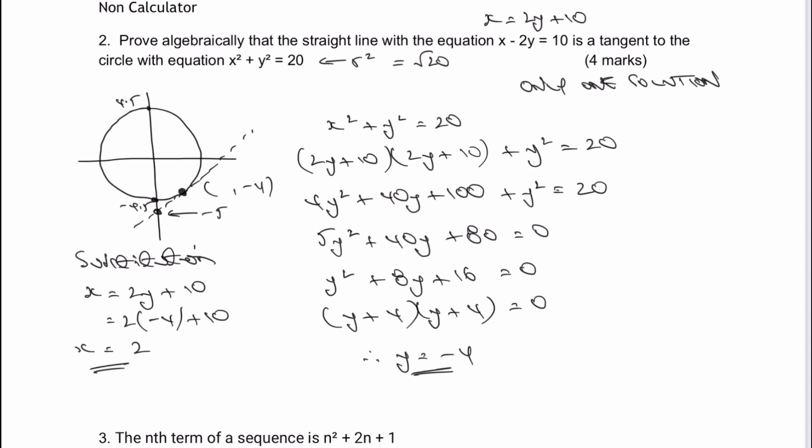So now I've got my two values, one for x and one for y. But importantly, it's one solution, which clearly demonstrates it's a tangent. Therefore, x equals 2 and y equals negative 4. And that would be the answer to question number 2.